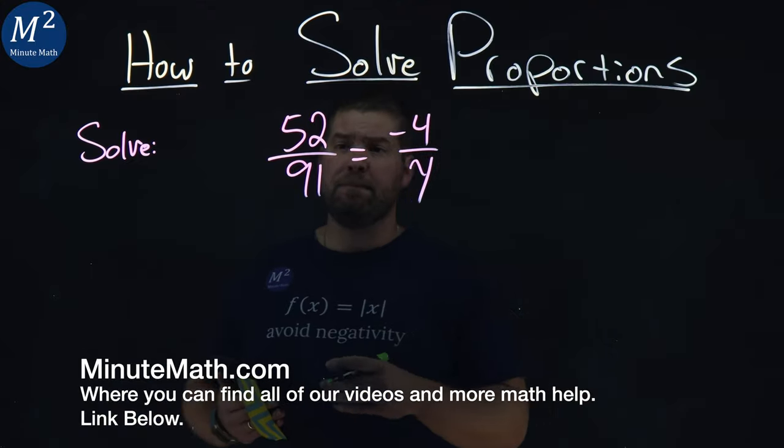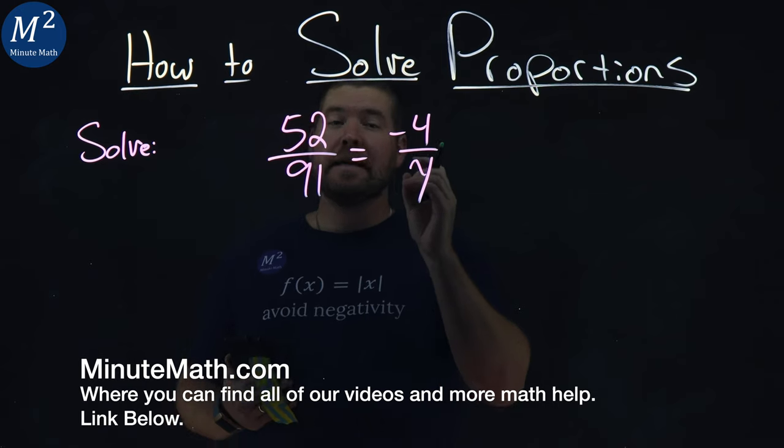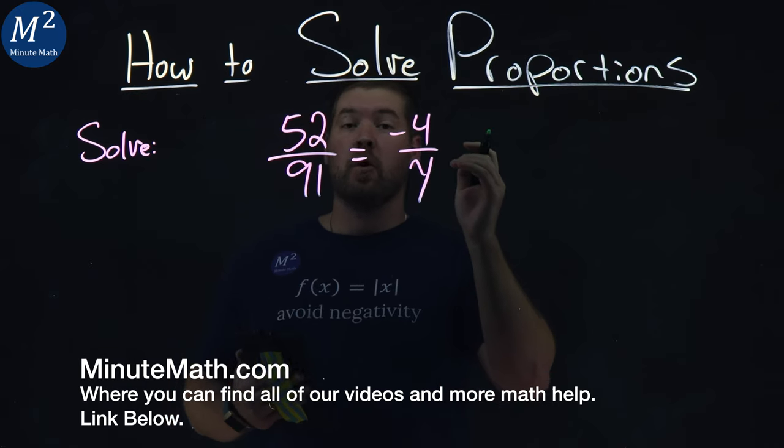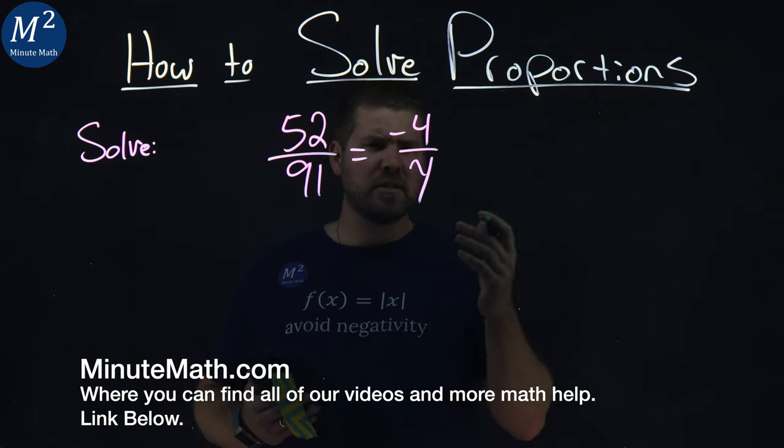We're given this problem right here. 52 over 91 is equal to negative 4 over y. I'm going to solve this proportion.